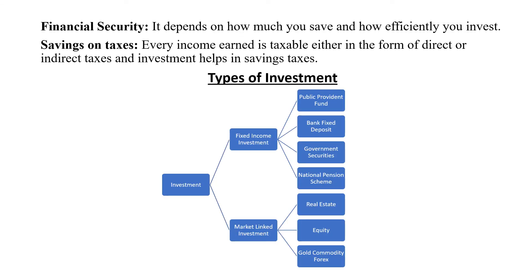Financial security depends on how much you save and how efficiently you invest. Investment also helps in building a corpus, which can be used for attaining financial goals and to offset any future financial emergency. Every income earned is taxable — either in the form of direct taxes or indirect taxes — and investing helps in saving taxes. The government has provided various options for deductions and exemptions under income tax, and the maximum tax rate that can be leveraged is 30%.